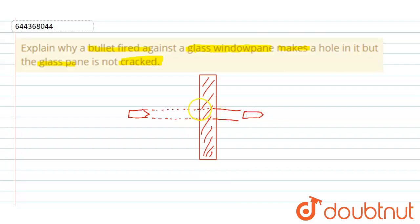And it makes a hole in the glass window, but not cracked from the other part of the glass window. So why is this so?